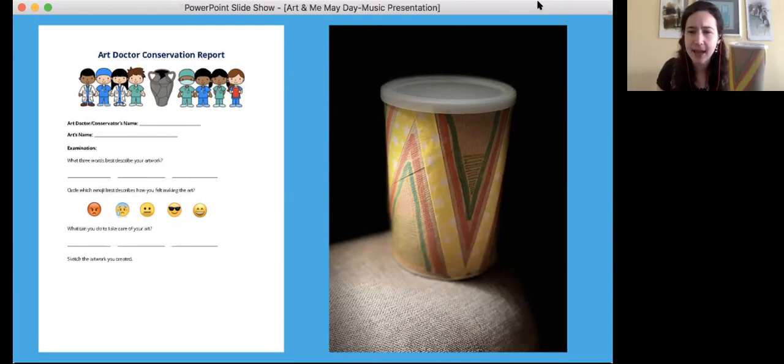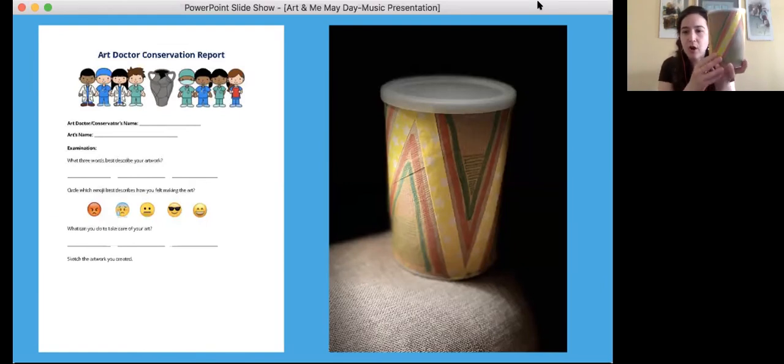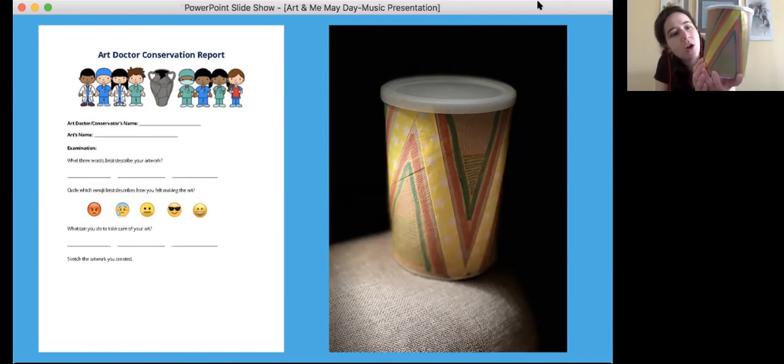Now for the examination part, this is where we're going to do the close looking. I might use the Optivisors that Ellen talked about before, those magnifiers. So what three words best describe your artwork? How would you describe this musical instrument?